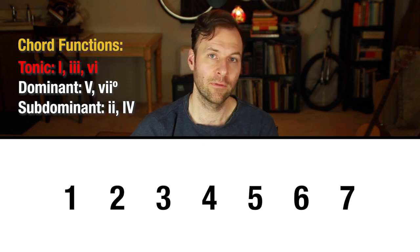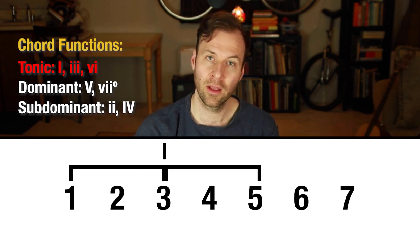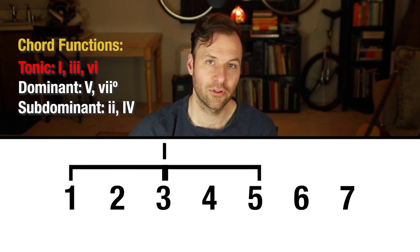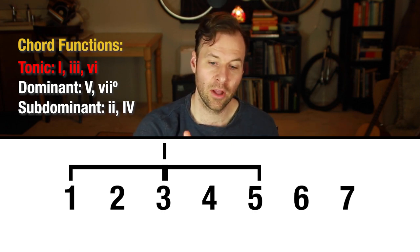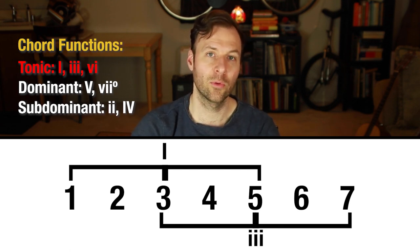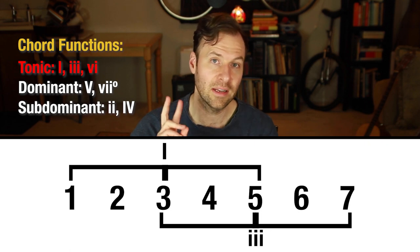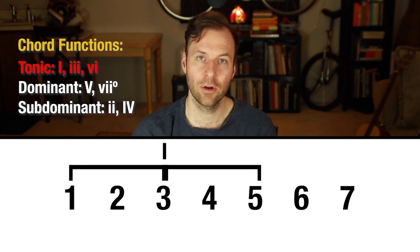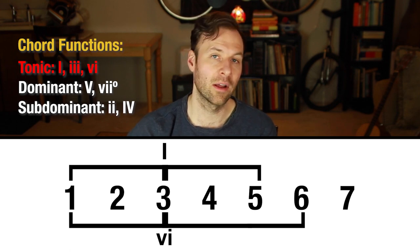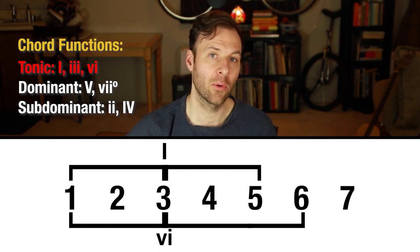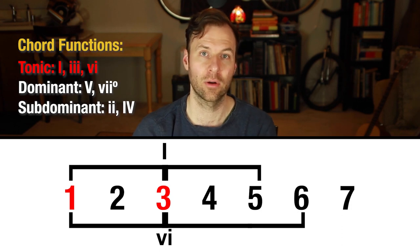Chords that share two or more of the same notes are more likely to also share the same function. The one chord — the tonic chord itself — is made up of notes one, three, and five of the scale. The three chord, another tonic functioning chord, is made up of three, five, and seven of the scale. Those two chords share two of the same notes. The six chord, the other tonic functioning chord, is made of six, one, and three of the scale, and it also has two notes in common with the one chord.